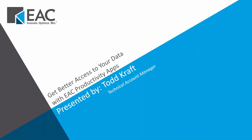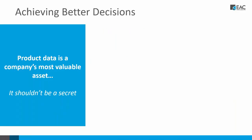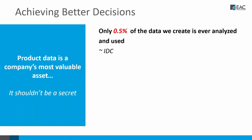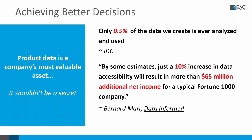Today's presentation, I'll go through a few slides and then show the apps live. One of the key things about the productivity apps is achieving better decisions. We shouldn't keep our product data a secret. There's data out there saying that about 0.5% of the data we create is ever analyzed and used. If you can increase that by 10%, that will result in more than $65 million additional net income for a typical Fortune 1000 company.